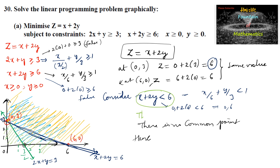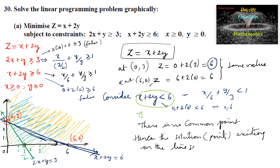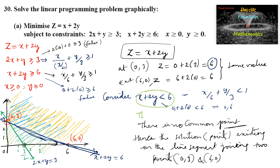Hence, the solutions are all points existing on the line segment joining (0, 3) and (6, 0). Since there is no common point below z = 6, every point on this line segment gives the minimum value z = 6. There are infinitely many solutions.